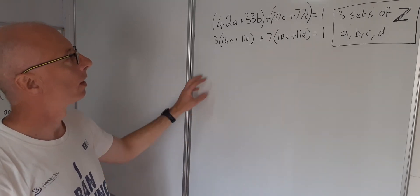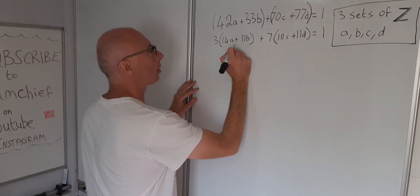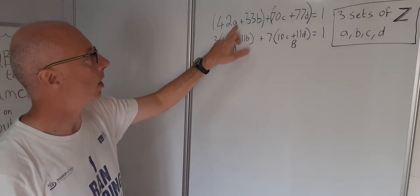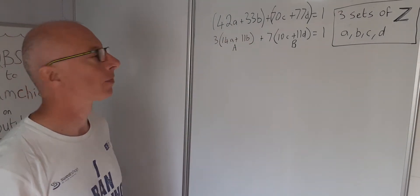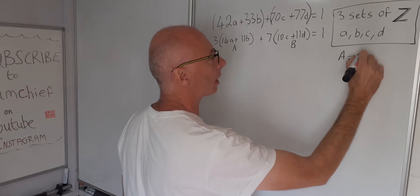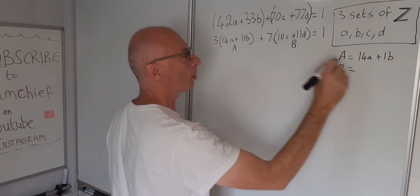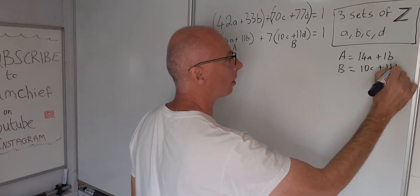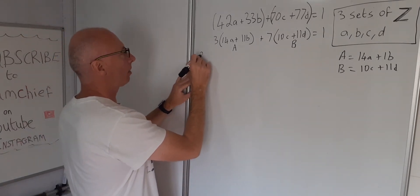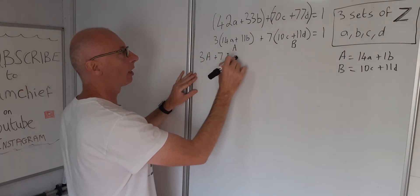Next, I'm going to assign each grouped part to a capital variable — note these are different from the lowercase variables. So let capital A = 14a + 11b and capital B = 10C + 11D. This gives us the simpler equation: 3A + 7B = 1.